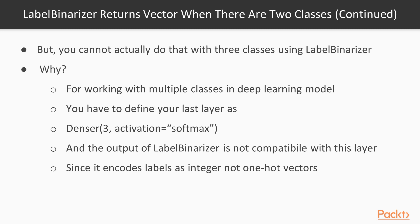The problem arises when you want to work with more than two classes. In that case, you can't really use LabelBinarizer. When working with multiple classes in a deep learning model, you have to define your last layer as a dense layer with a number of neurons equal to the number of classes — in this example, three. You also have to use softmax as the activation function instead of sigmoid. The output of LabelBinarizer is not compatible with this layer because it encodes labels as integers, but we need one-hot encoding — specifically shaped vectors for each label.